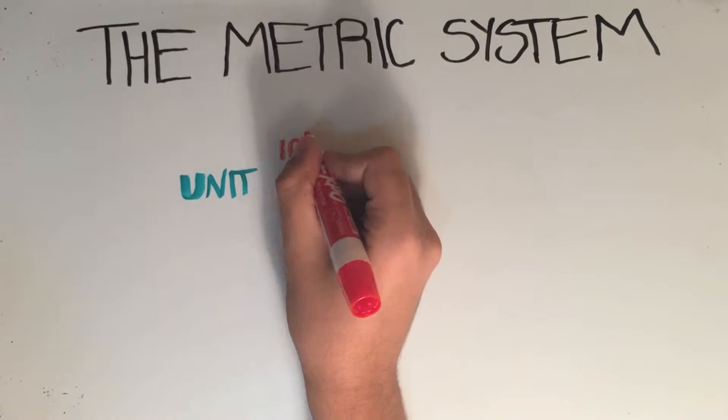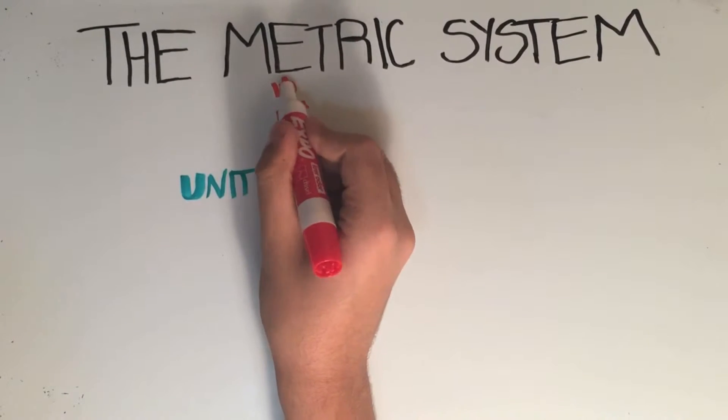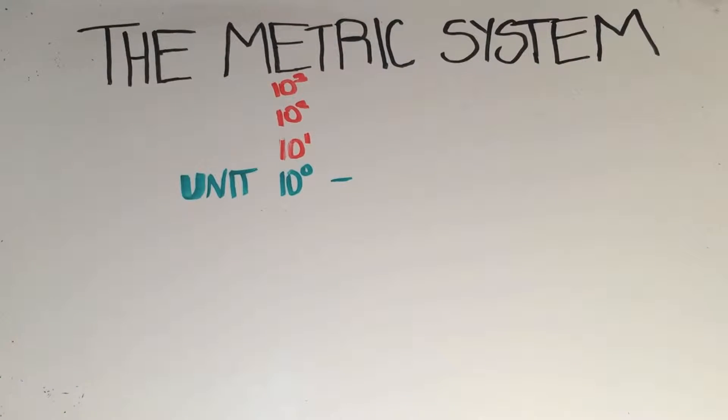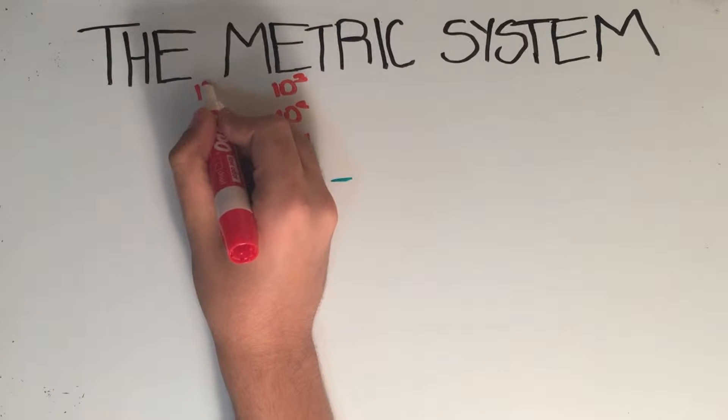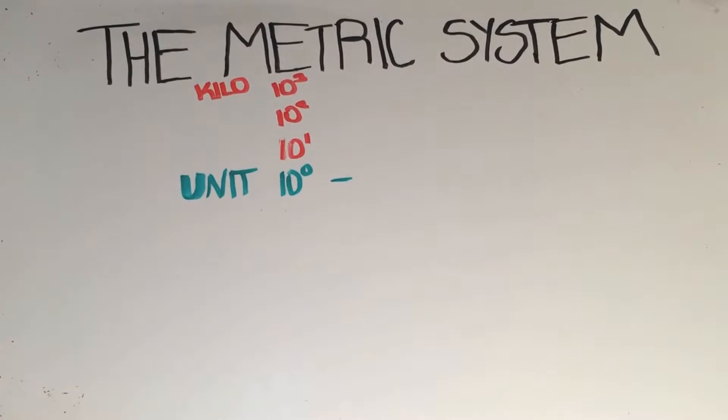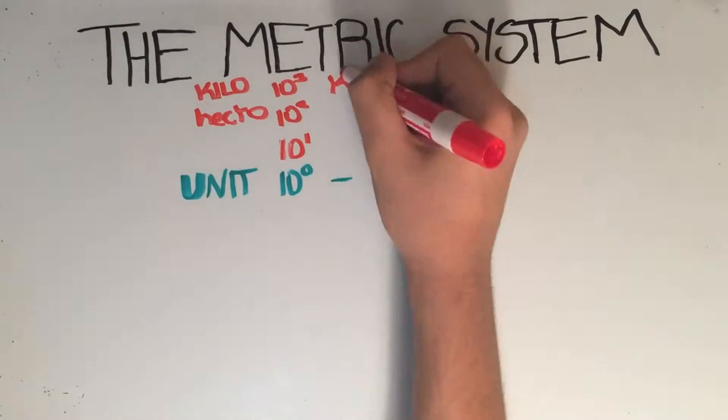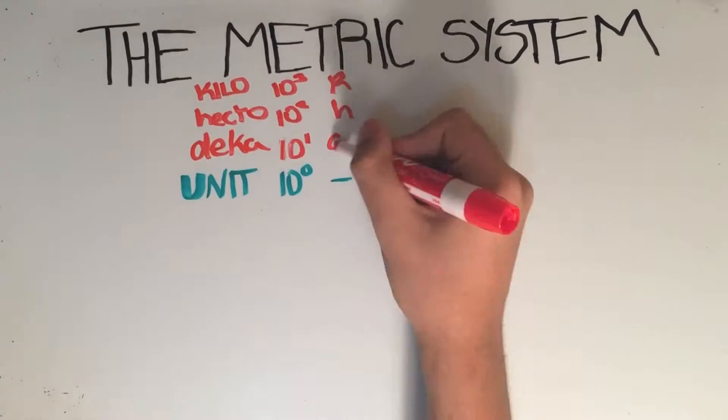The main ones start off with unit, so for example 10 to the power of 0 grams is equal to 1 gram. Then there is kilo, which is 10 to the power of 3, so for example 10 to the power of 3 grams would be 1 kilogram. Then you've got 10 to the power of 2, which is hecto, and 10 to the power of 1, which is deca.